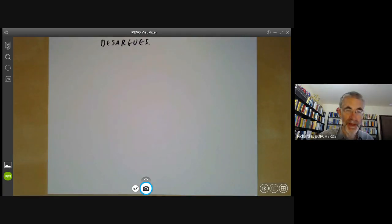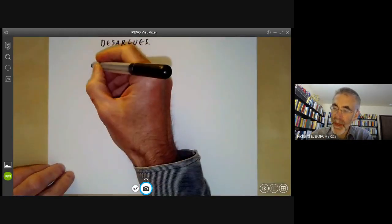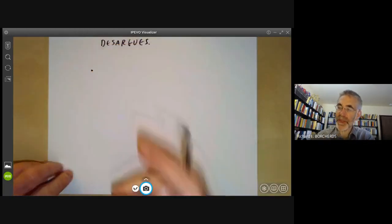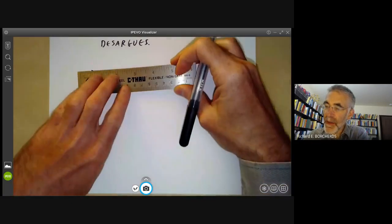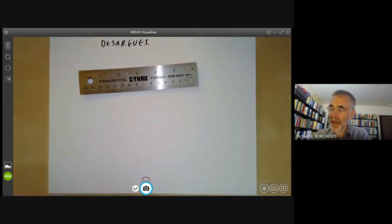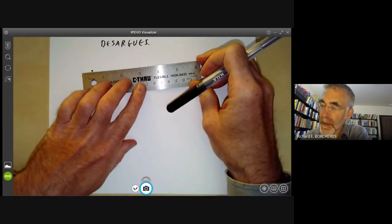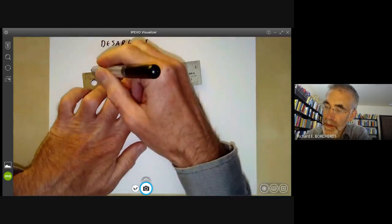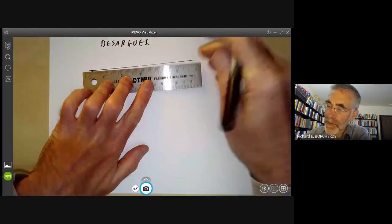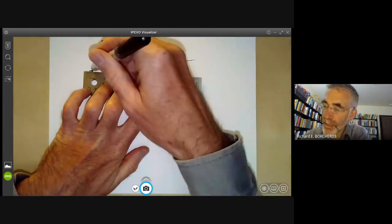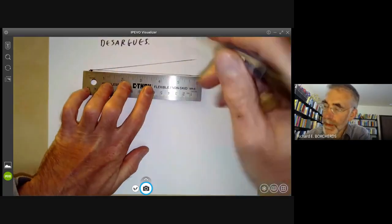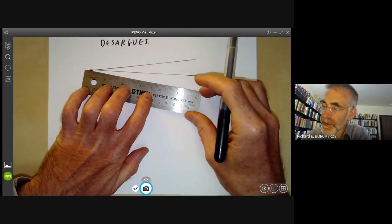So he was a French mathematician and engineer who was one of the founders of projective geometry. His theorem is like Pappus' theorem - it's remarkable that it's only about points and lines. And it says the following: suppose we take a point and you think of this point as being an observer observing two triangles.